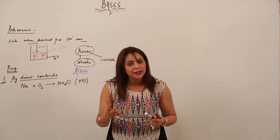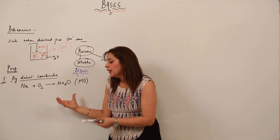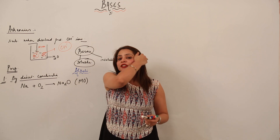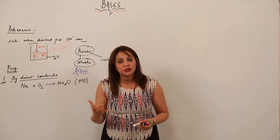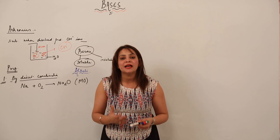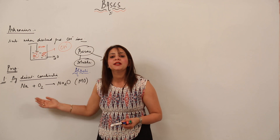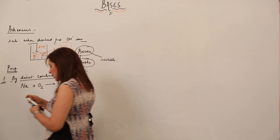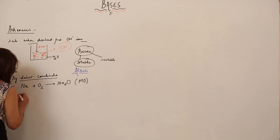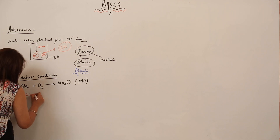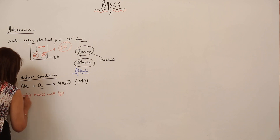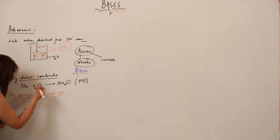Metal oxides are also regarded as bases because when dissolved in water they dissociate to produce hydroxide ions. So metal oxides can be formed by reacting a metal with oxygen. The second method is by reacting metal with water.